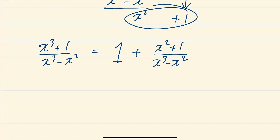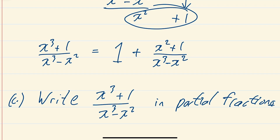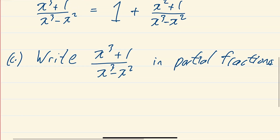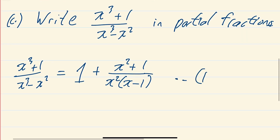The next part of the question says: write (x³+1)÷(x³−x²) in partial fractions. The first thing you'd write is that (x³+1)÷(x³−x²) equals 1 plus (x²+1) over the bottom. I'd factorize the bottom to make life easier: x² comes out leaving x(x−1), so we have 1 plus (x²+1) over x²(x−1). I'll call this equation one.